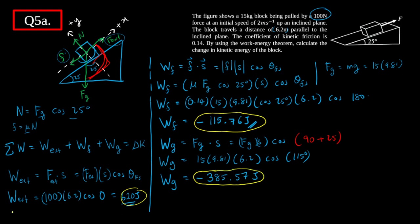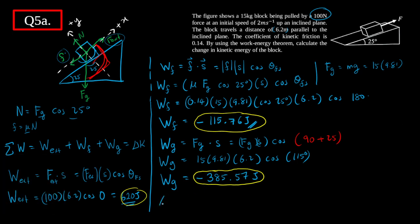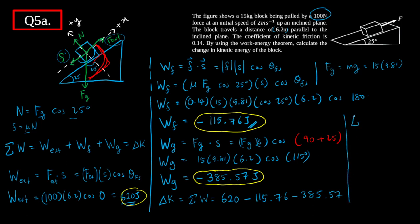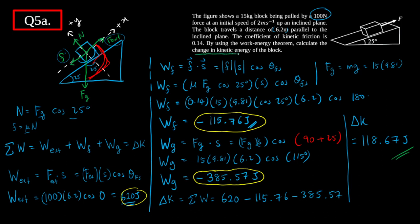Now I can calculate the net work done on the block. The change in kinetic energy equals the sum of all work done: ΔKE = 620 − 115.76 − 385.57 = 118.67 joules. So the change in kinetic energy of the block is 118.67 joules.